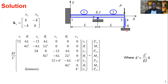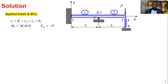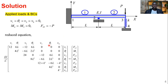The boundary conditions are: v1, theta1, v2, v4 all equal zero due to support conditions. M3 equals zero because node three is a hinge with no moment. F3 in the y-direction equals negative P because the load P acts downward. We now reduce the global equation by temporarily removing rows and columns corresponding to zero degrees of freedom: v1, theta1, v2, and v4 are all removed.